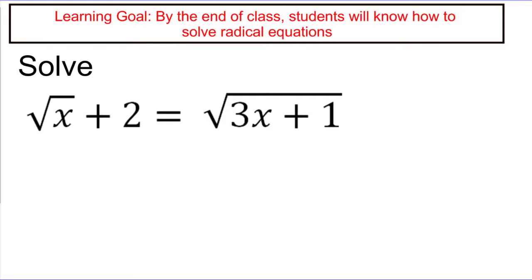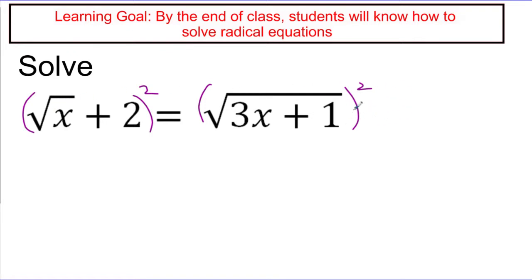This next one is similar to the last in that the right-hand side is already nicely isolated — it looks like something I could just square. However, I have to square the whole big thing on the left-hand side. It's actually impossible in this problem to isolate both radicals. If I tried to move the second radical to the right-hand side, I'd isolate the left but un-isolate the right. So I need to square something that's not all that nice on the left. The right-hand side is the easy one: squaring a square root, both cancel, and I end up with 3x plus 1.